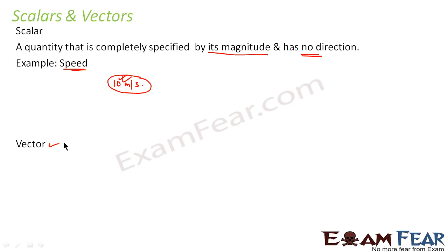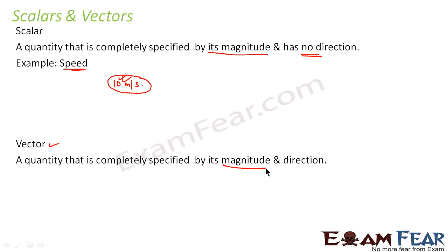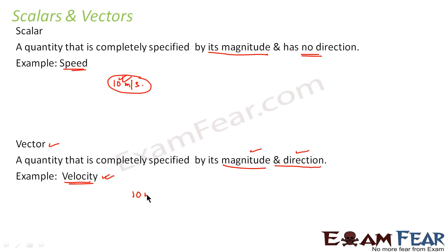On the other hand, a vector quantity is a quantity that is completely specified by its magnitude and direction. In order to completely describe a vector quantity, you have to mention both the magnitude as well as the direction. Take the example of velocity: if I say that a car is moving with a velocity of 10 meters per second, that information would be incomplete, because I did not mention in which direction the car is moving. So any quantity described by both magnitude and direction is a vector quantity.